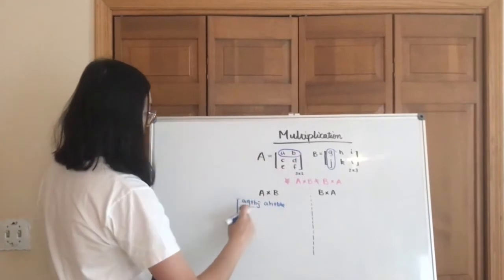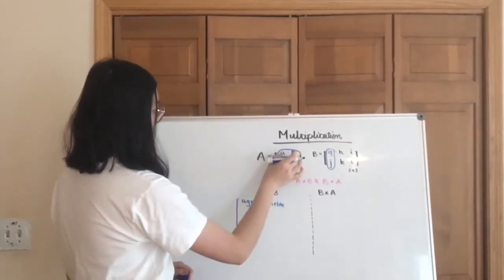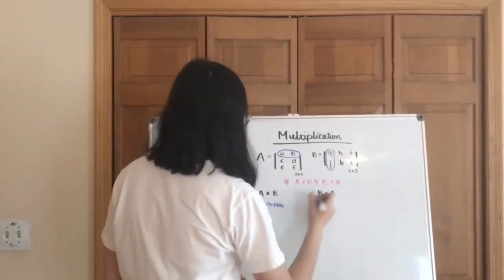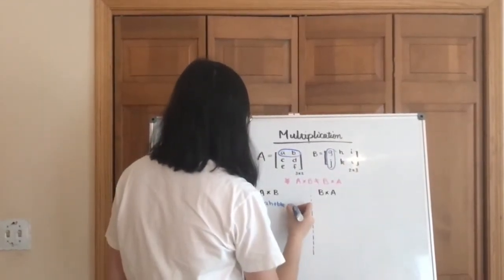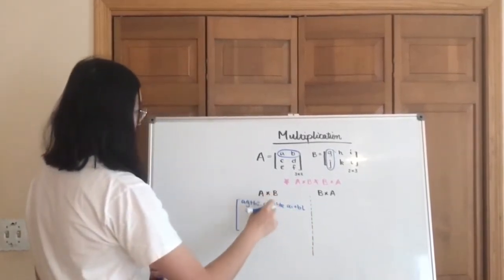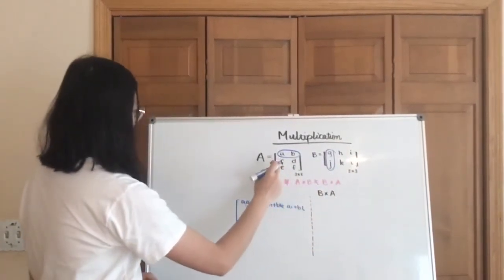If you kind of work your way horizontally through, that's basically you're maintaining in the first row. So a, b remains the same, but then you're changing columns. And then I do a times i plus b times l. So my first row is done. I'm going to move on to the second.